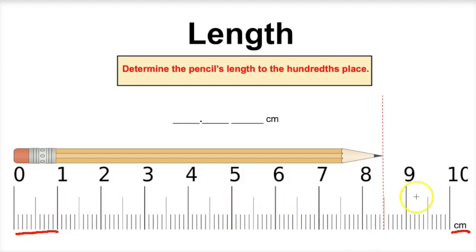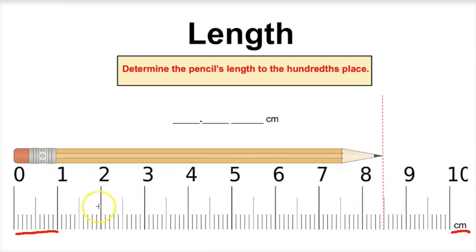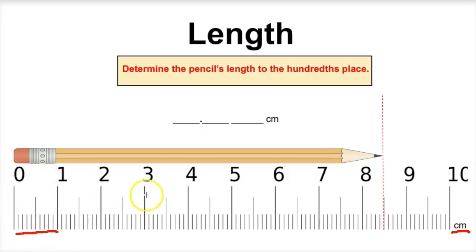If we take a look at our meter stick here, it's important to first figure out, before we even use it, the level of precision of the instrument. So if we take a look at the level of precision of this meter stick, we can see that it is precise to the millimeters. These little lines right here are millimeters, and these bigger ones are centimeters.